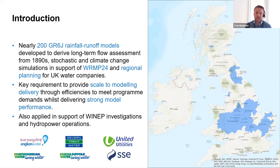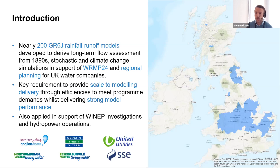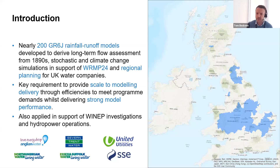The work originally started for Anglian Water and Severn Trent Water, and we then went on to develop projects for Northumbrian Water and Essex and Suffolk Water as well. I'd like to take the opportunity to thank them all for their support in being able to do this presentation. A key requirement of that work was to provide scale to the modelling delivery through efficiencies to meet very tight programme demands and also deliver strong model performance. We've also started to apply GR6J in some other settings — as part of a project for United Utilities, a WRMP investigation, and also in support of SSE's hydropower operations.